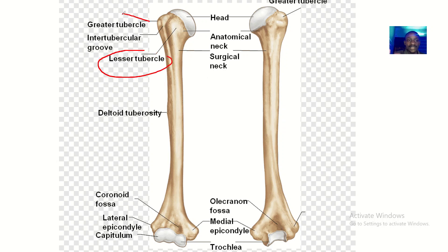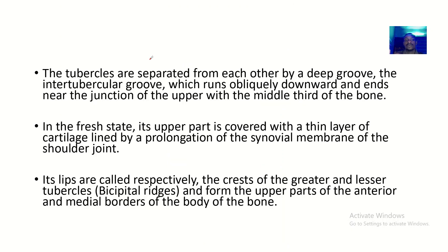Looking at this image, here is the lesser tubercle and here is the greater tubercle. The greater tubercle has three impressions for the rotator cuff muscles, while the lesser tubercle is where the subscapularis inserts. The two tubercles are separated by a deep groove, also known as the intertubercular groove.